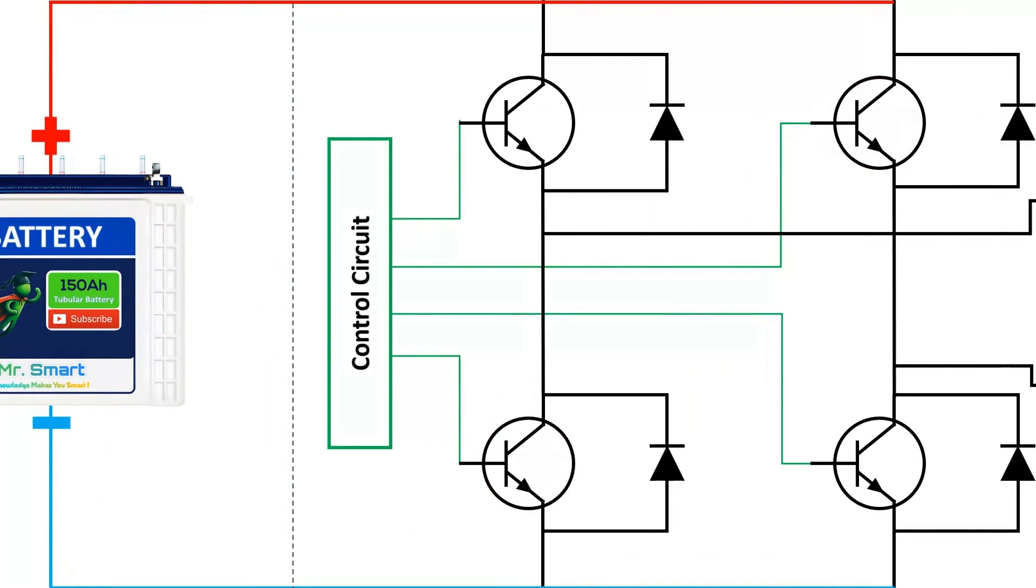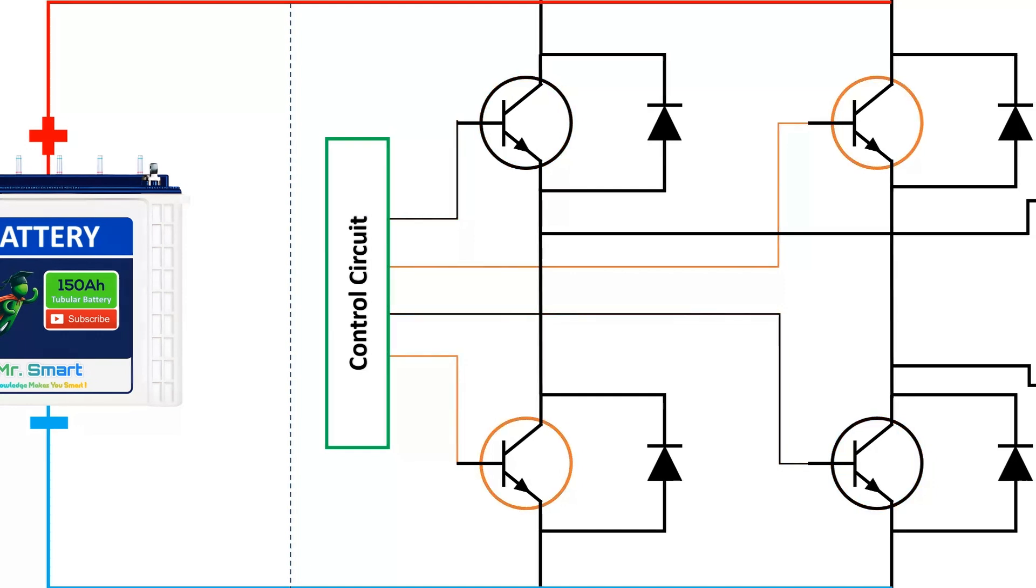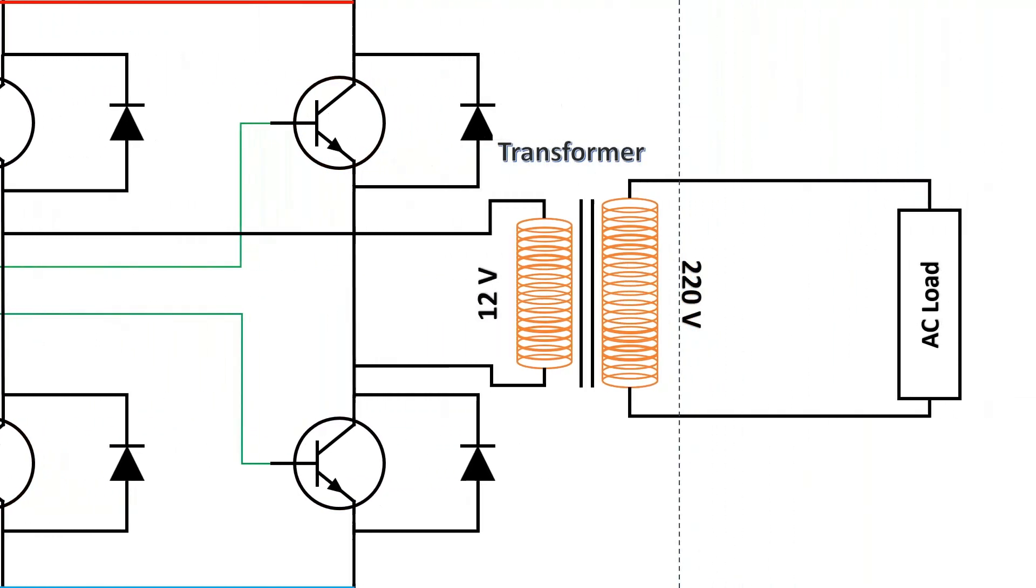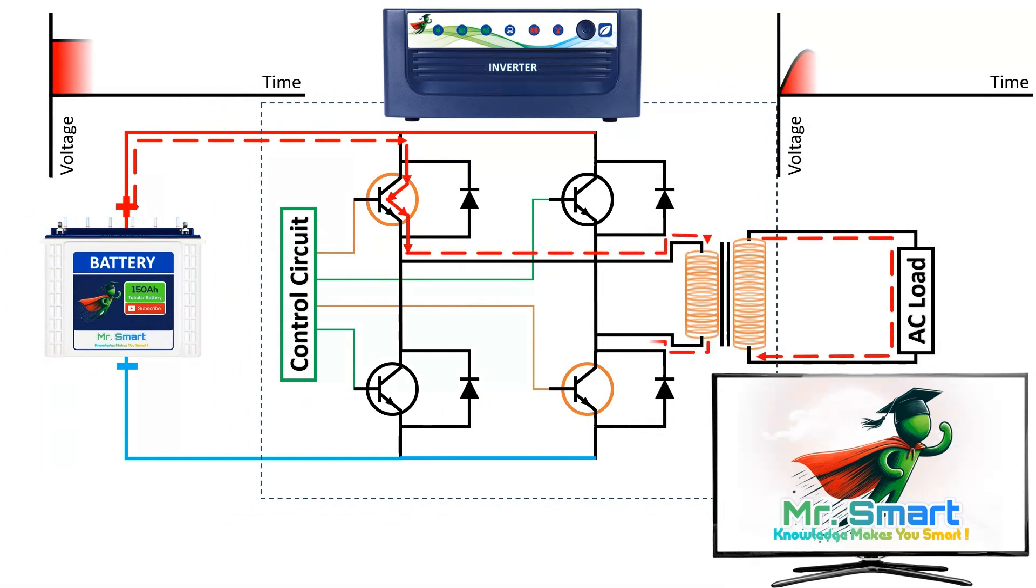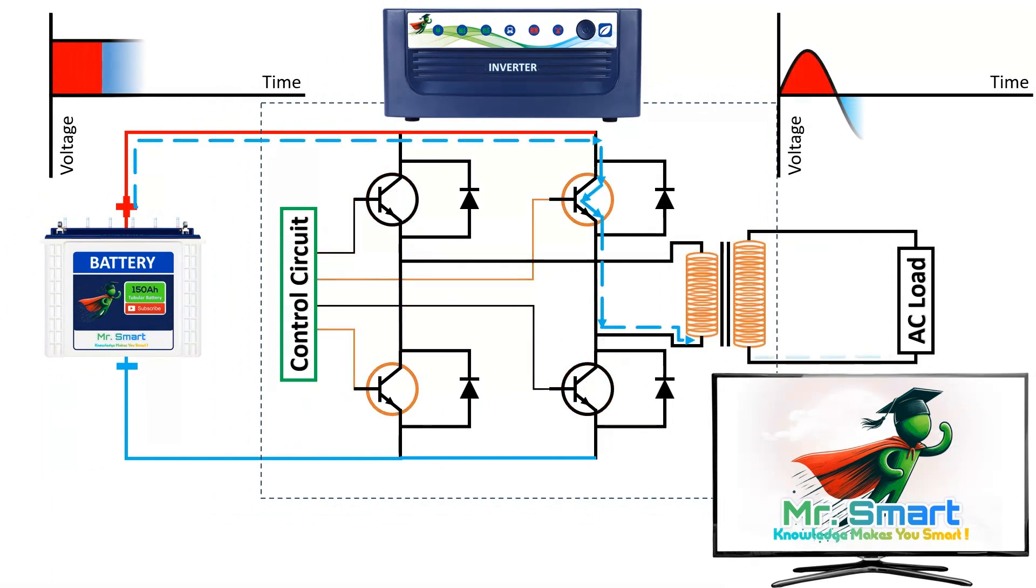The control circuit is the brain of the inverter. It manages the switching to ensure the output is smooth and stable. The transformer boosts the voltage to the level needed for your appliances. And finally, you get the desired AC output for your household appliances.